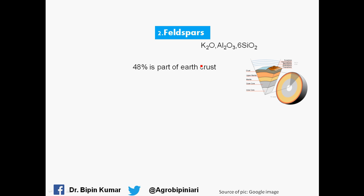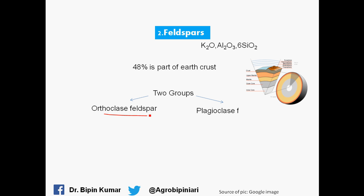The second most important mineral is feldspar. Feldspar has the composition of potassium, aluminum, silicon, and oxygen. It composes about 48% of the earth's crust. There are two types of feldspar: the first is orthoclase feldspar and the second is plagioclase feldspar.